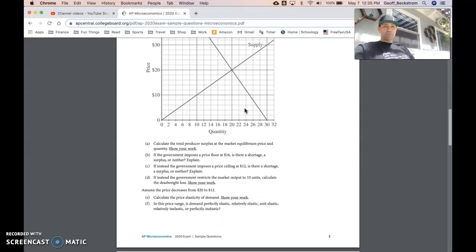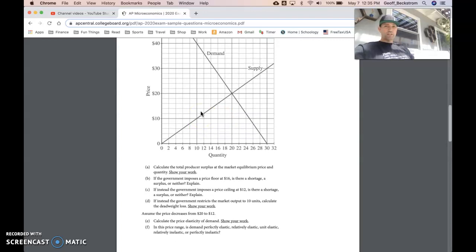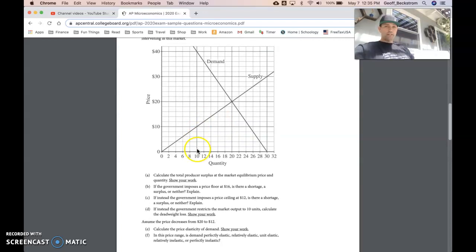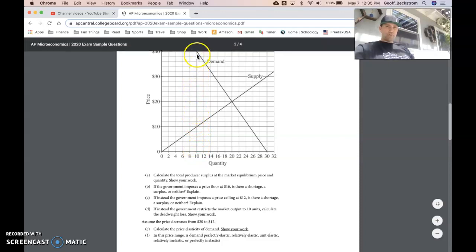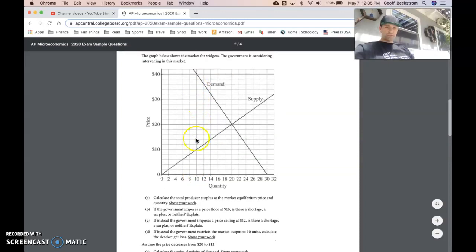And if instead the government restricts the market output to 10 units, calculate the deadweight loss. So a quota here at 10 units. So the deadweight loss, if this market is restricted to only 10 units, is this little triangle right here, the area of total surplus that's not realized because of the limit on the number of transactions.